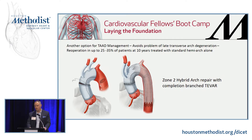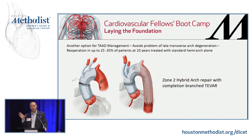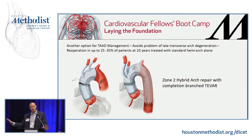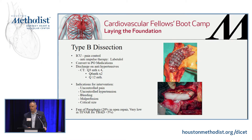Another option increasingly being used for type A's: patients who have just a hemi-arch repair — 20% to 30% of those patients followed over time are going to develop a large arch aneurysm requiring a redo operation. For acute type A's in young, otherwise healthy patients, we were de-branching the innominate and left carotid just in front of the subclavian, avoiding the recurrent laryngeal nerve, doing a zone 2 hybrid arch, then putting a TEVAR in to address the whole arch so they won't need a second operation. You can even do a branched TEVAR graft into the subclavian.